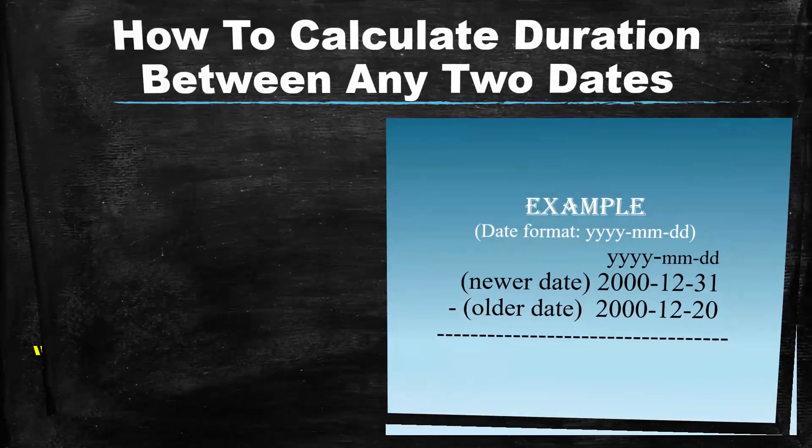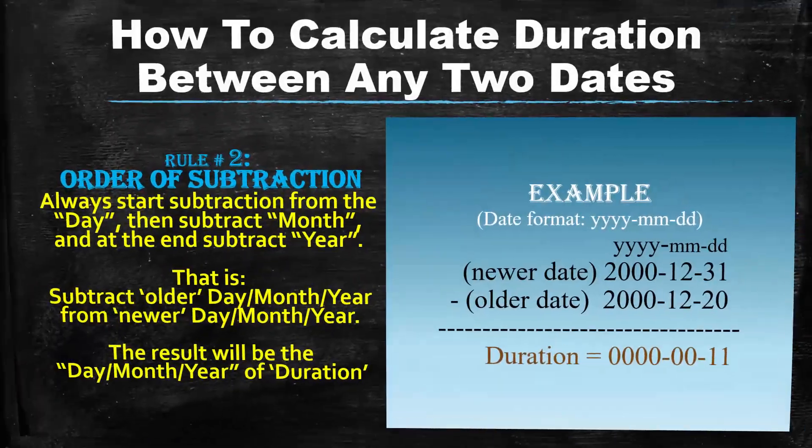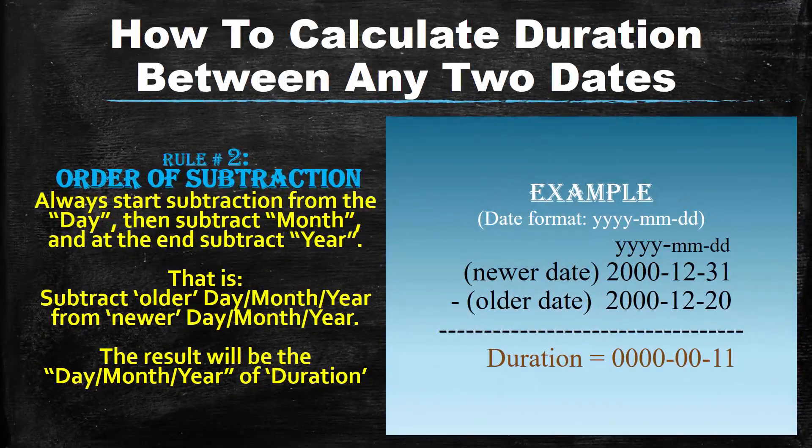For the subtraction process, we have rule number two: order of subtraction. You always start subtraction from the day, then subtract the month, and at the end subtract the year — that is, subtract older day, month, year from newer day, month, year.